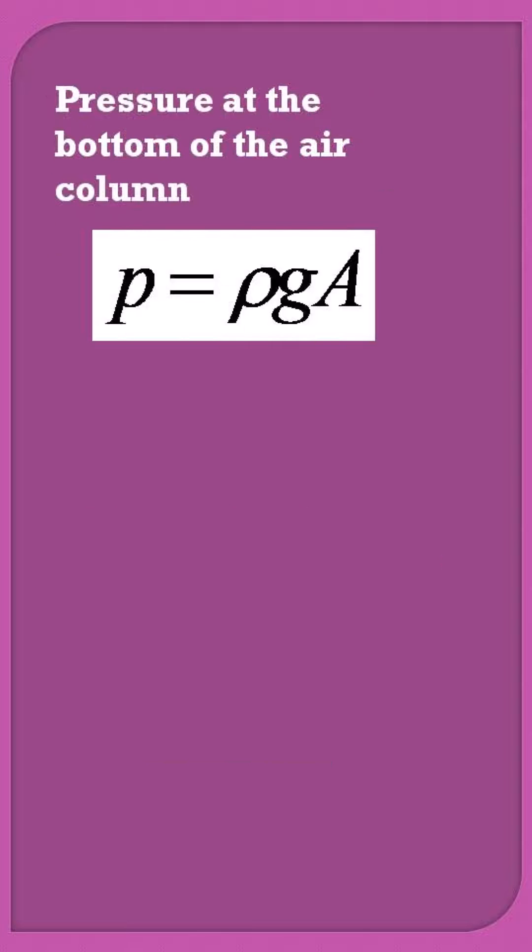Now he goes back to the air column and tells that the pressure at the bottom of the air column is given as p = ρga, with the constant ρ and constant g, which was assumed by Newton throughout the air column.